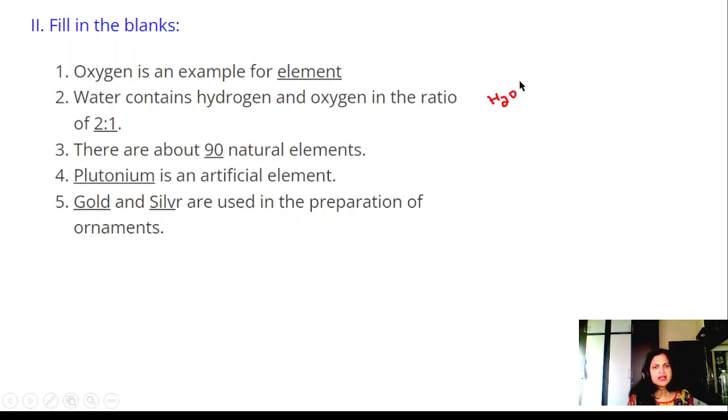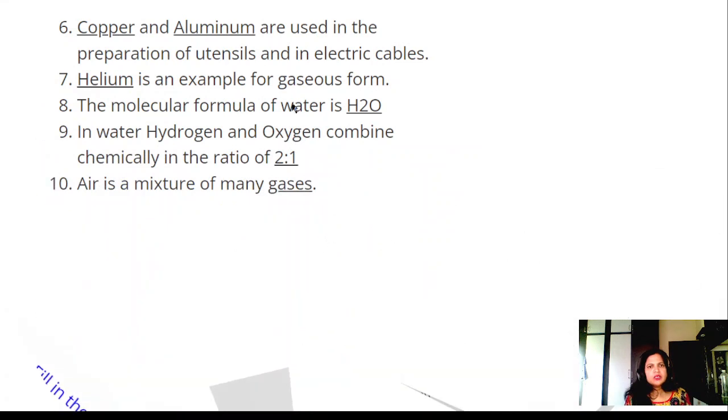There are about 90 natural elements. Plutonium is an artificial element. It is man-made. Gold and silver are used in the preparation of ornaments. Copper and aluminum are used in the preparation of utensils and electric cables.